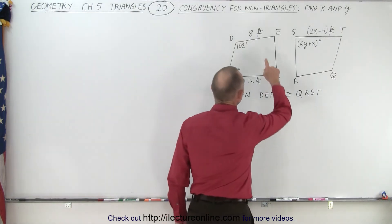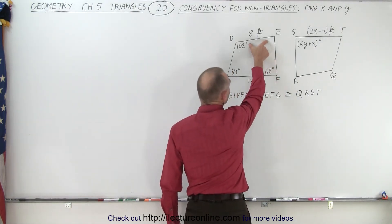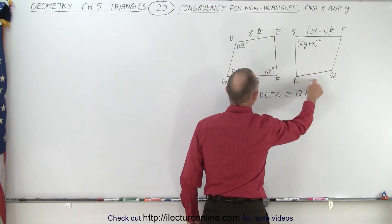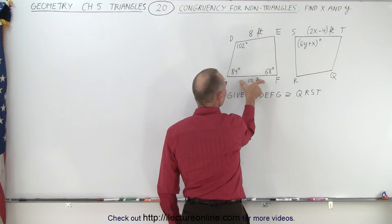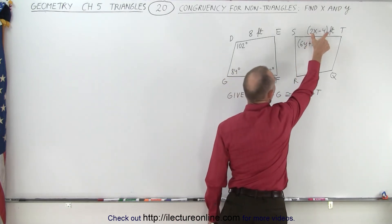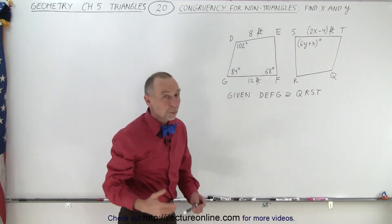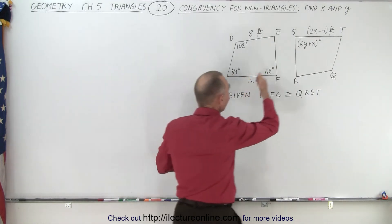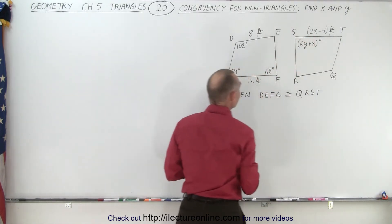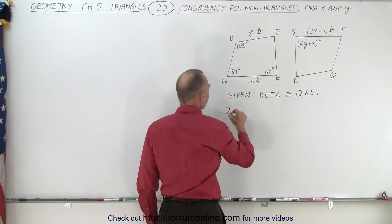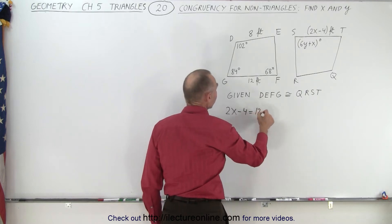Notice here that this is a smaller side over here being 8 feet corresponding to this side right here. But they don't tell us what the length is over here. And here the longer side is 12 feet. And here they tell us that the corresponding side over there is 2X minus 4 feet, which means that those two must have the same size or the same length. Therefore we can conclude that 2X minus 4 must equal 12.